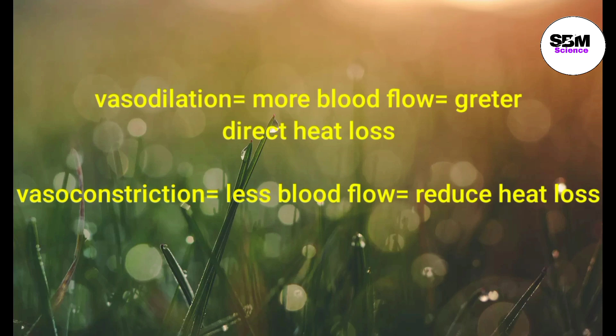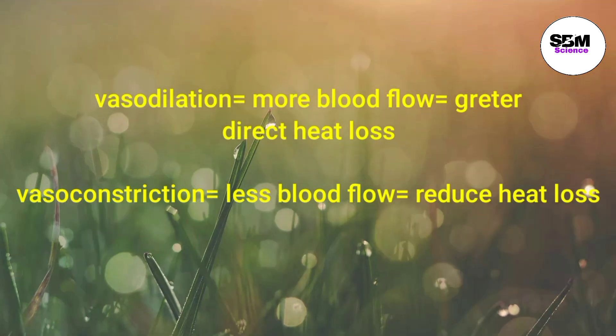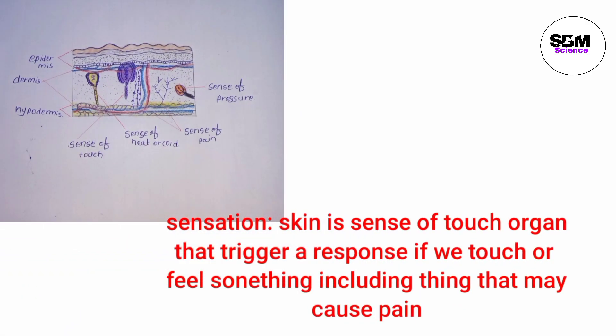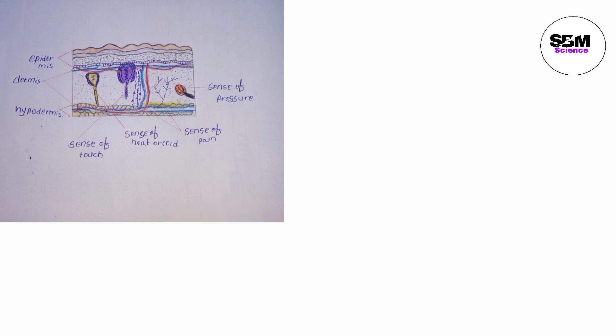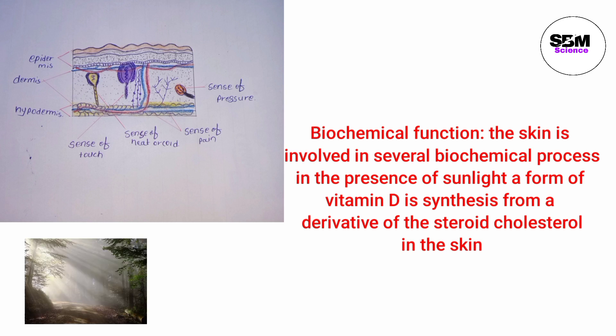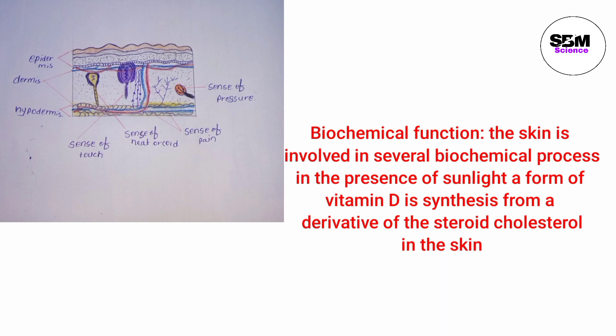Vasodilation results in more blood flow and greater direct heat loss. Vasoconstriction results in less blood flow and reduced heat loss. Sensation is another function — the skin is a sense of touch organ that triggers a response if we touch or feel something, including things that may cause pain. The skin also has a biochemical function: in the presence of sunlight, a form of vitamin D is synthesized from a derivative of the steroid cholesterol in the skin.